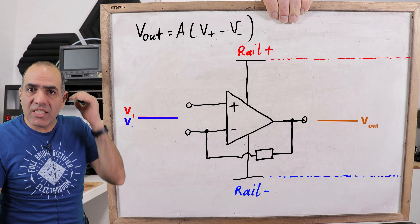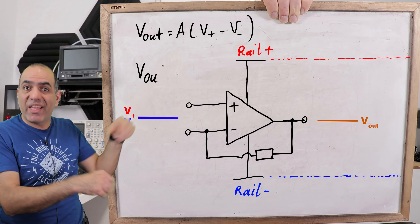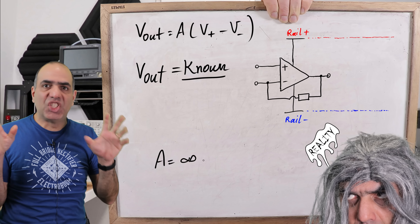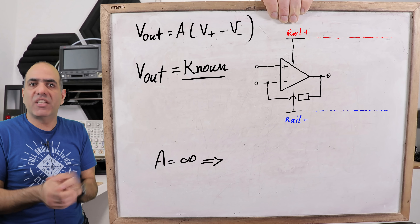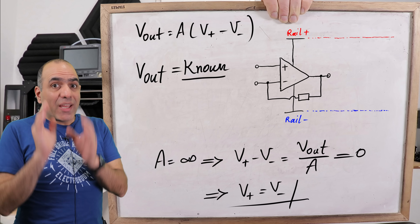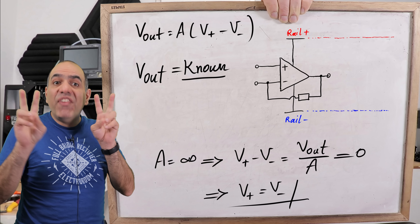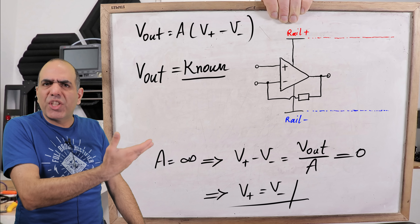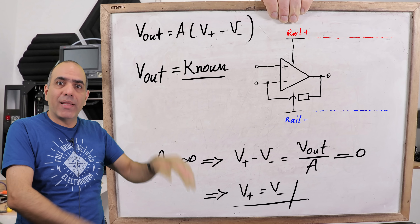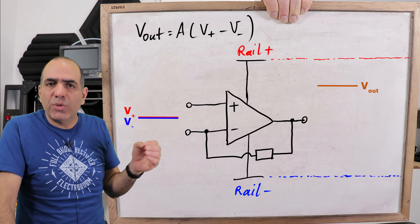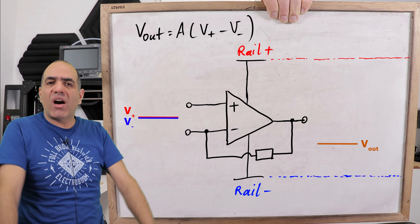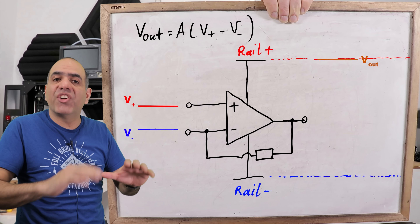So the output has to stay still between the power rails with a known value. This means, assuming an infinite gain, the delta between the positive and negative inputs must be zero — so we can assume both inputs are virtually shorted, because their voltages are the same, as long as the output is within the power rails. But as soon as the output gets too close to a power rail, all bets are off.